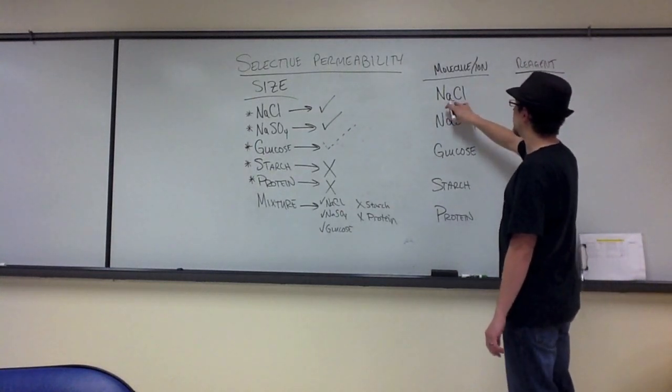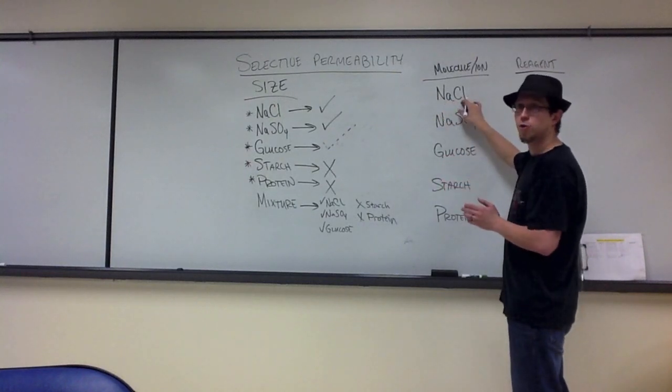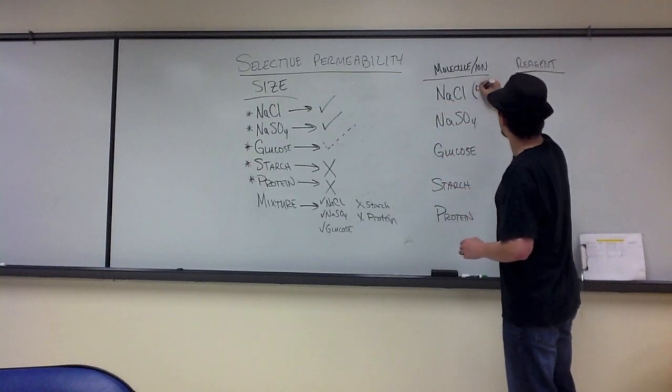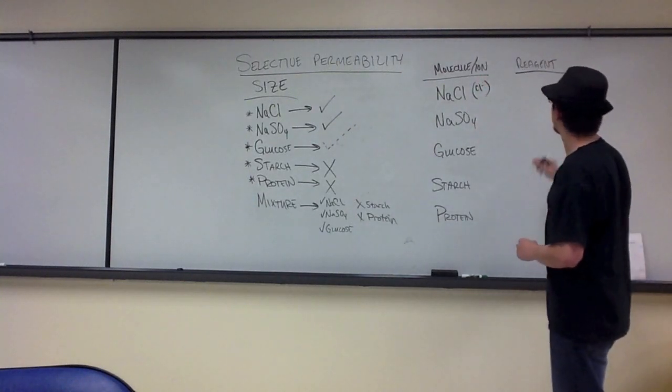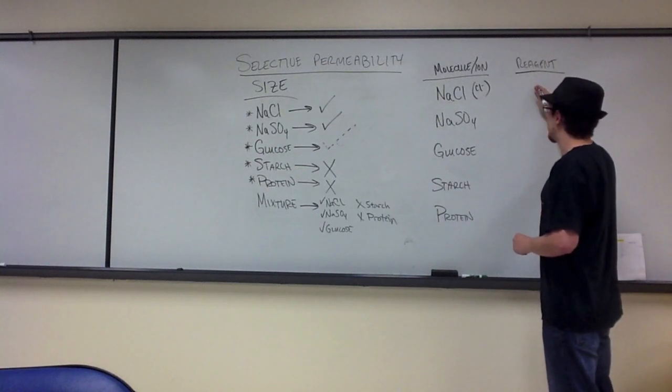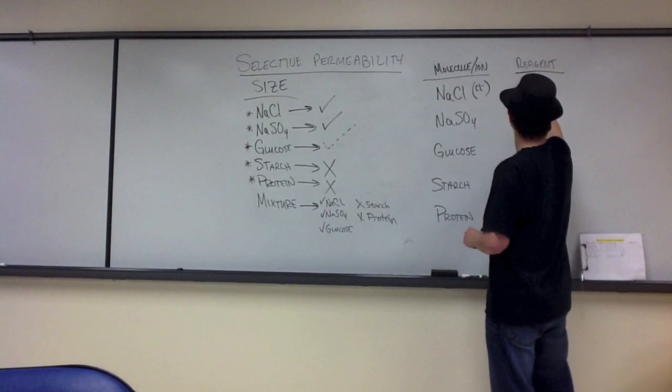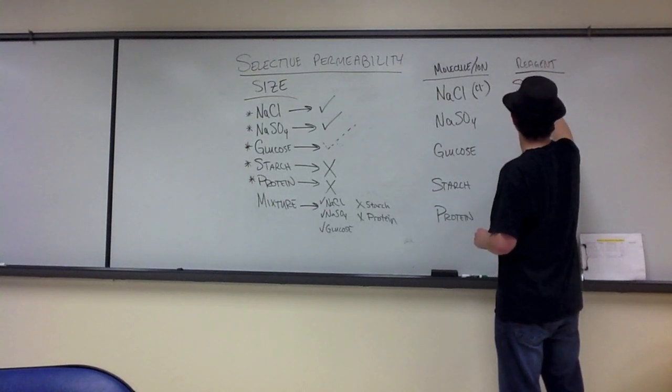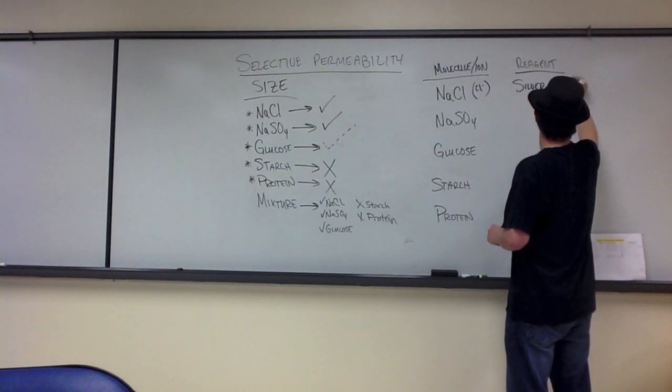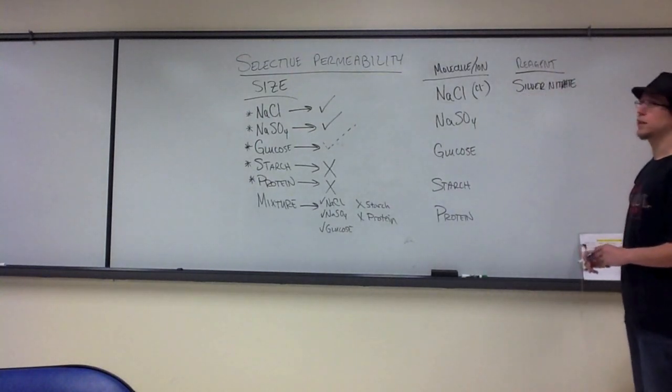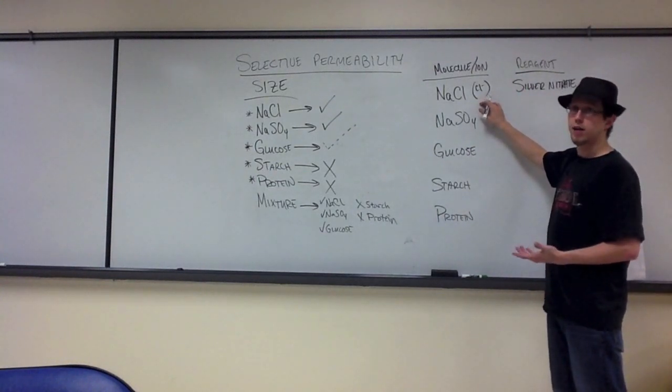What you need to understand is that sodium chloride is going to dissociate when it goes into the water into sodium ions and chloride ions. So we're actually going to be testing for the chloride ions. And the reagent that we're going to use to test for those chloride ions is called silver nitrate. So we're going to use silver nitrate to determine if we do or don't have chloride ions in the solution.